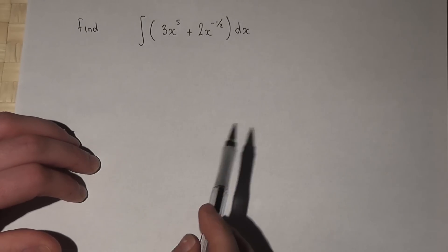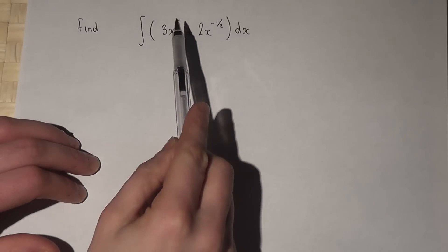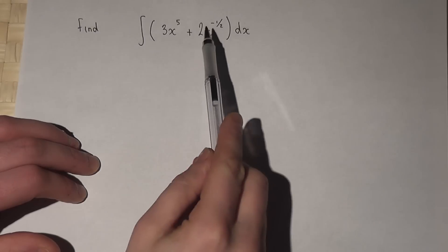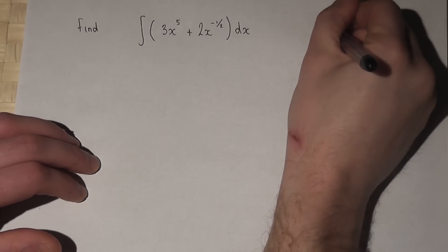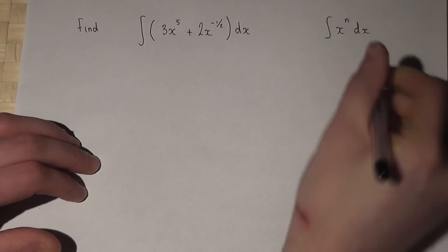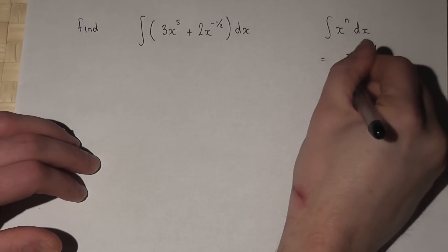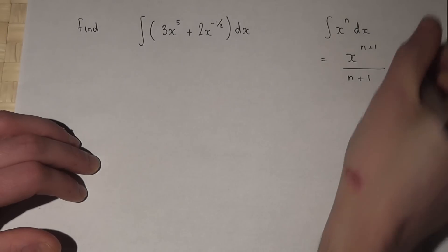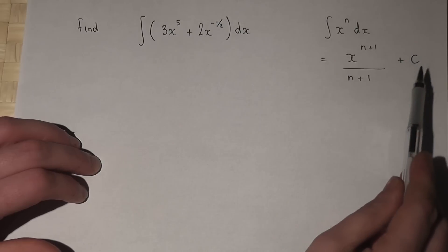This question asks us to integrate a function with a positive integer power and a negative fractional power. Now we know that the integral of x to the power of n dx is just x to the n plus 1 all over n plus 1 plus the constant of integration.